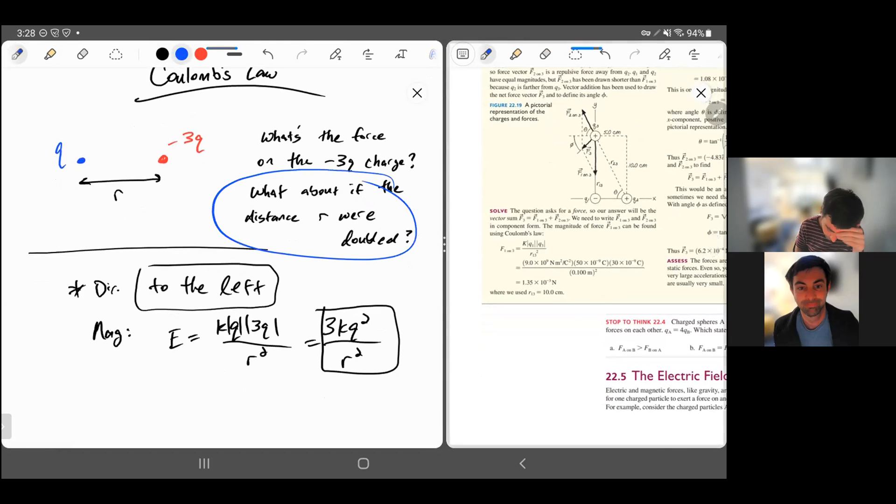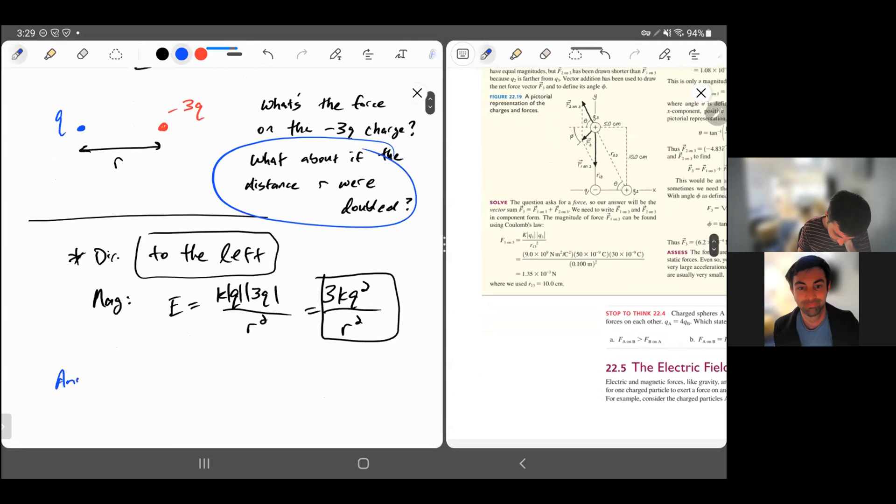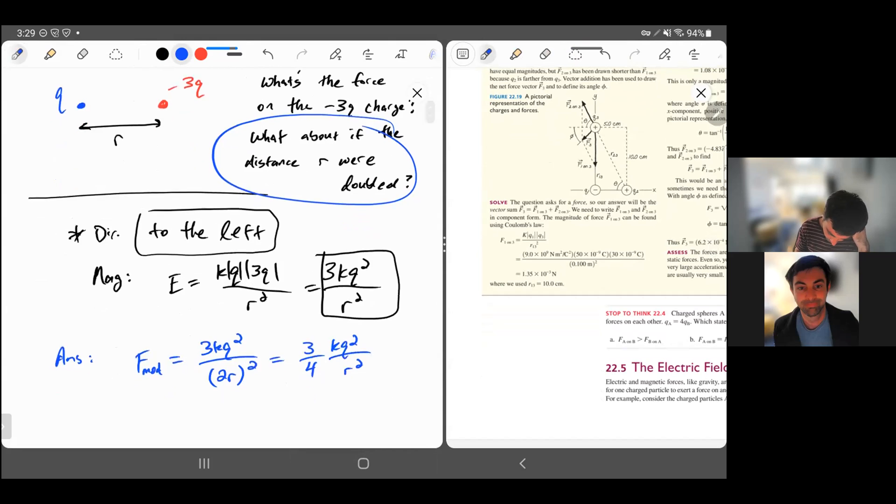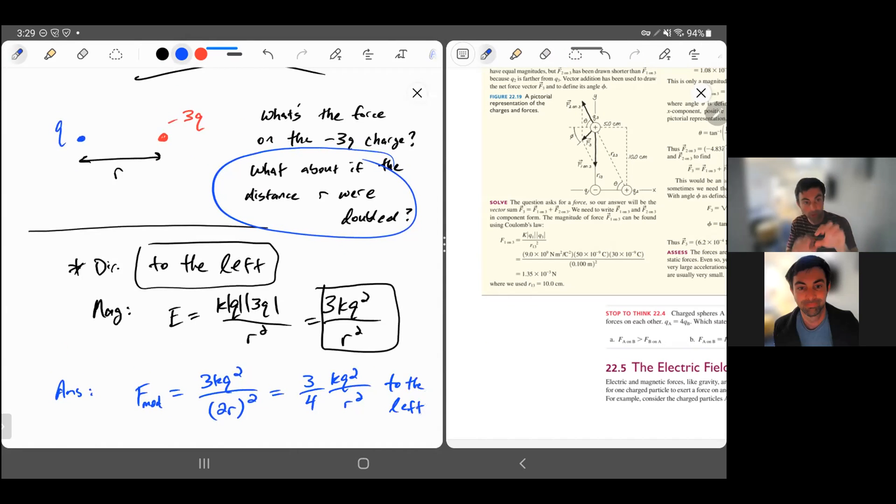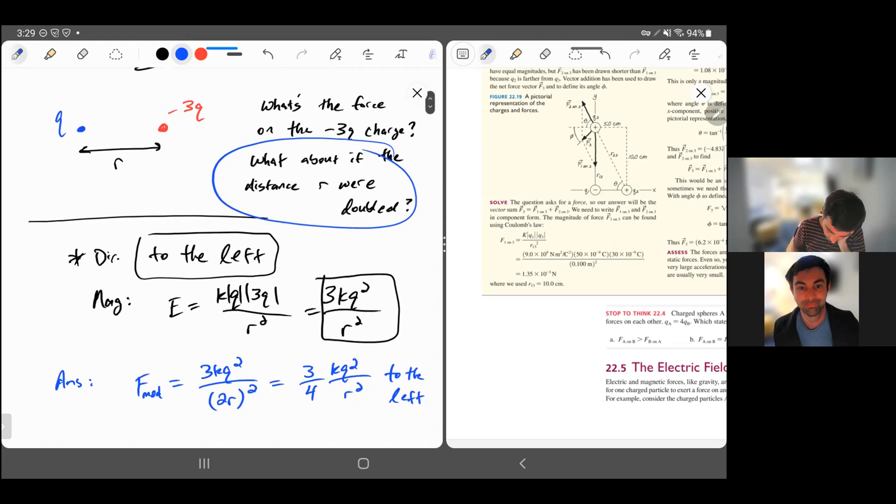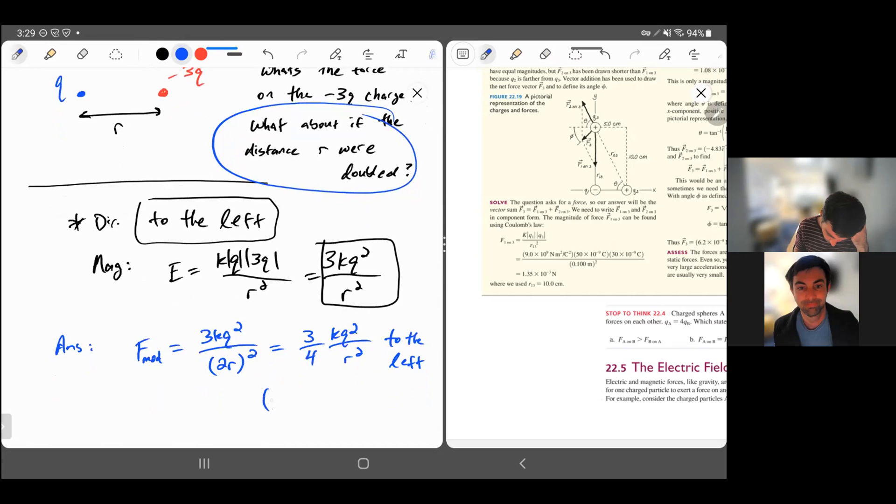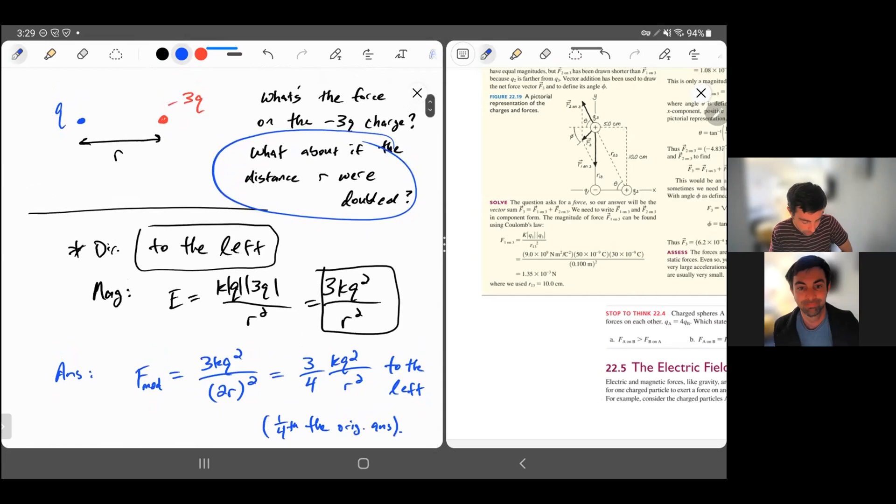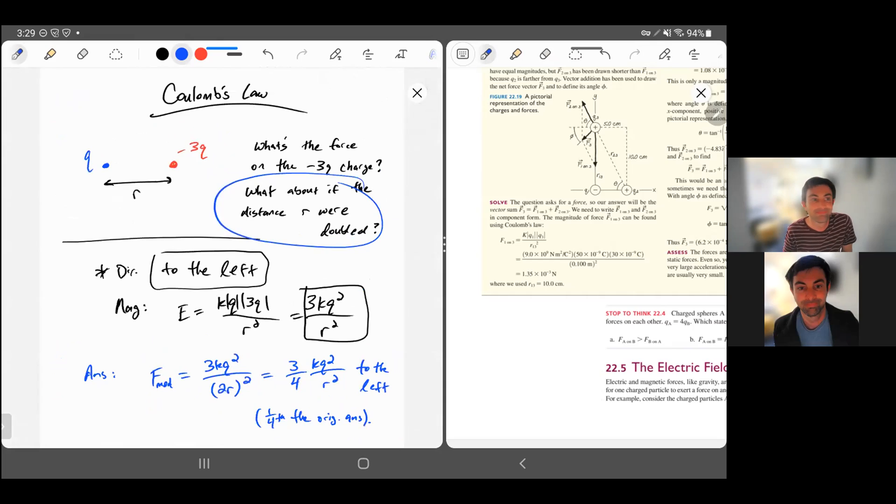What about if the distance were doubled? Then we would just replace r with 2r. So f with the modified version would be 3kq squared over, now the distance is going to double, so we replace r with 2r. It looks like this is only one fourth as big. This is 3 over 4kq squared over r squared, and again, it's to the left, assuming they're still on this horizontal line or dimension. It's one fourth the original answer. This is an example of a ratio style problem, just plugging in Coulomb's law. Okay, thank you.